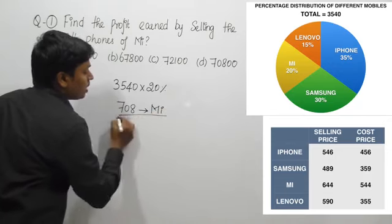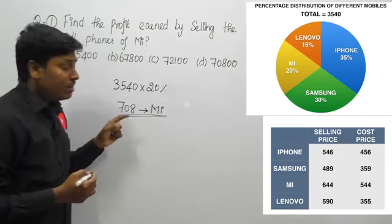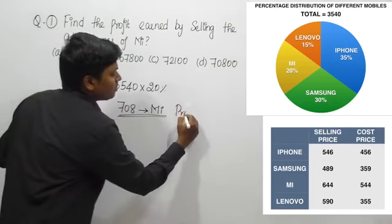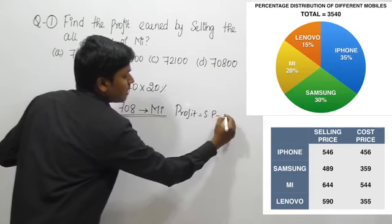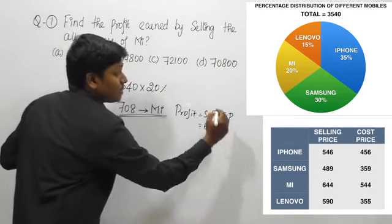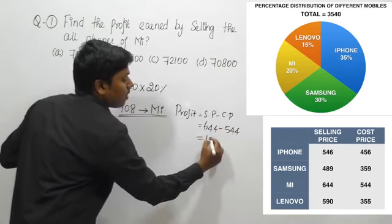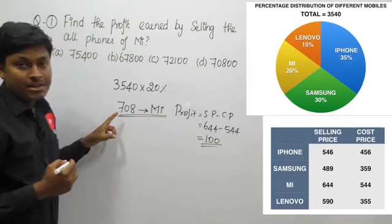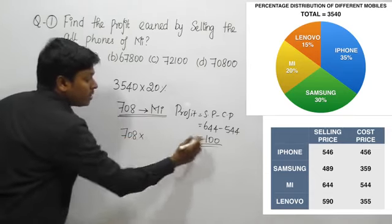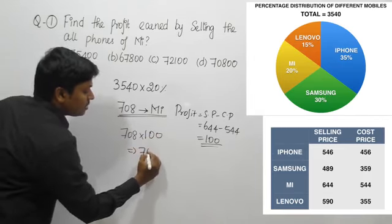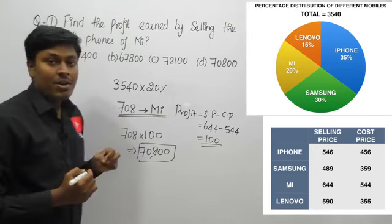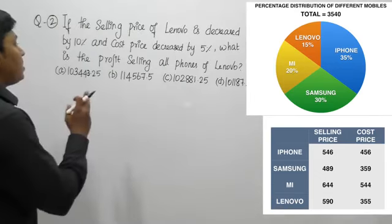Out of 3540, 708 mobiles are Mi. Our target is to find the profit earned. Profit equals selling price minus cost price. The Mi selling price is 644 and cost price is 544, so the profit per phone is 100. With 708 Mi mobiles and profit of 100 per phone, the total profit is 70,800.